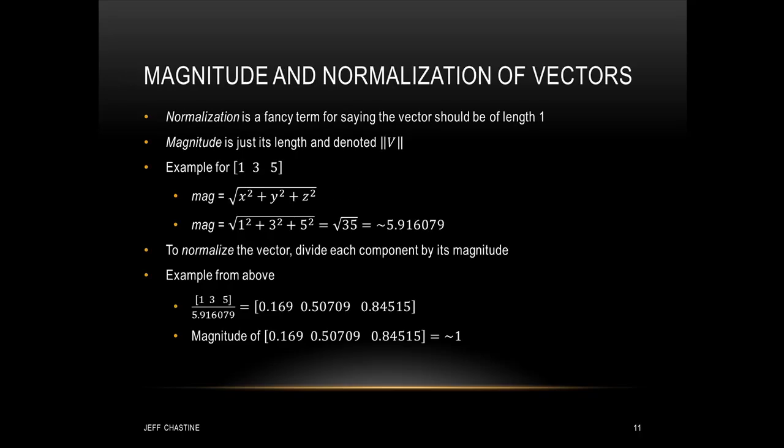Before we dive into those concepts, we need to talk about the magnitude and normalization of vectors. When we talk about the magnitude of a vector, we're talking about its length, denoted with double bars on each side of the variable. For example, the magnitude of vector (1, 3, 5) is the square root of x² + y² + z² — which is the square root of 1² + 3² + 5², giving us the square root of 35, approximately 5.9. Many of you will recognize this as how we calculate distance.